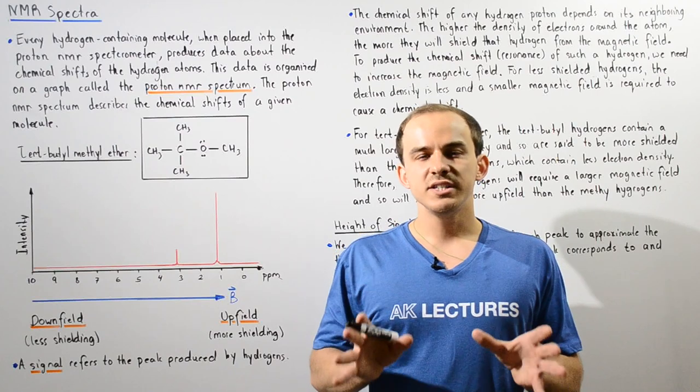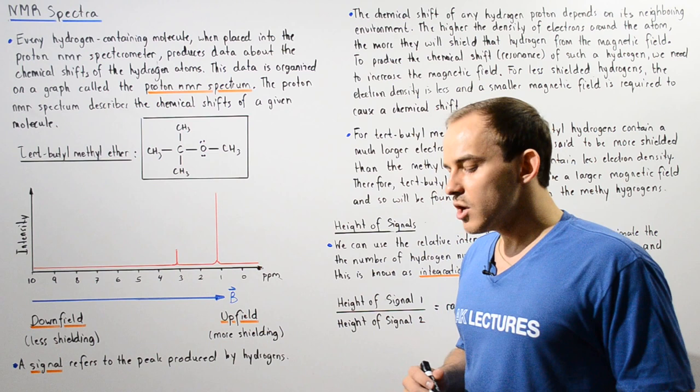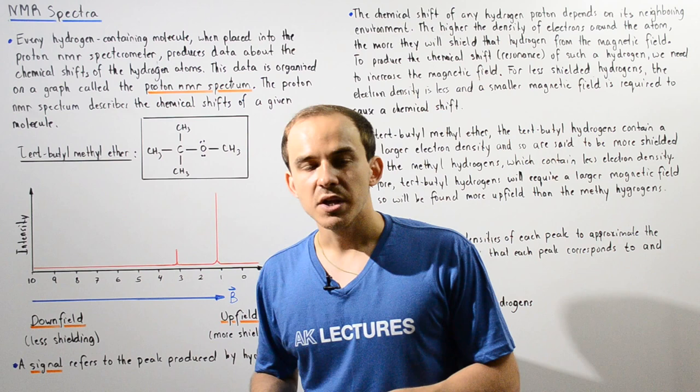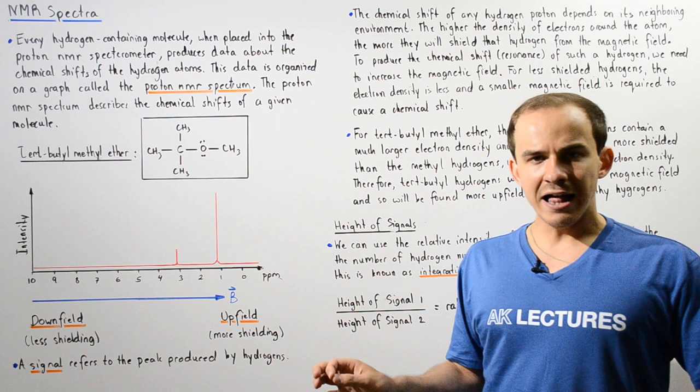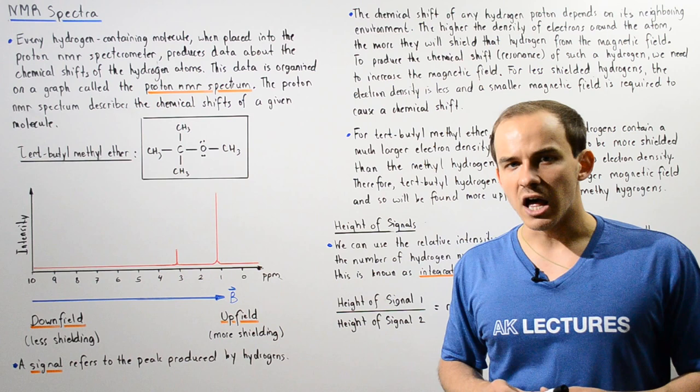Whenever we take a molecule that contains hydrogen atoms and we place it inside the proton NMR spectrometer, that spectrometer will produce a graph known as the proton NMR spectrum. The proton NMR spectrum describes the chemical shift values of all the hydrogen atoms found in that particular molecule. To see exactly what the proton NMR spectrum looks like, let's take a look at the following example.